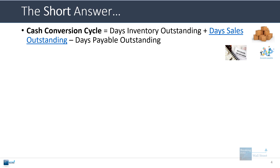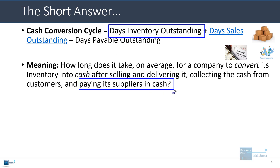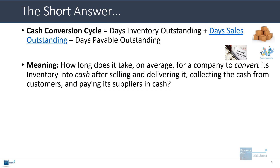The cash conversion cycle is defined as the days inventory outstanding plus the days sales outstanding minus the days payable outstanding. In other words, how long does it take on average for a company to convert its inventory into cash after selling and delivering it to customers, collecting the cash from those customers, and then finally paying the suppliers in cash? Typically with inventory purchases, companies do not pay upfront in cash right away — instead they get the inventory on credit, and then later when invoices are due, they pay suppliers in cash.